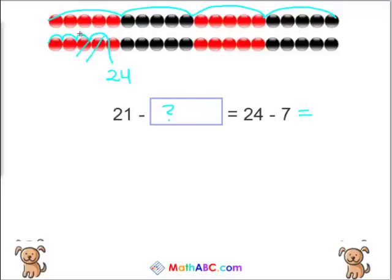1, 2, 3, 4, 5, 6, 7. How many do you have left over? Well, 5, 10, 15, 16, 17. 24 minus 7 equals 17.